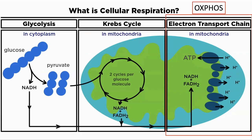The outcome of the electron transport chain is the bulk of the energy in the form of ATP. This last step is called oxidative phosphorylation. Cells can get energy from glycolysis, but it is very inefficient in terms of the energy gained per glucose consumed.